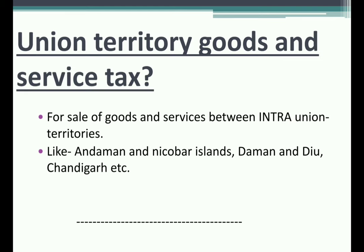The last type of tax in GST is UGST — Union Territory Goods and Service Tax, also written as UTGST. This applies to the sale of goods and services between union territories. The union territories included are: Andaman and Nicobar Islands, Daman and Diu, Chandigarh, Lakshadweep, Pondicherry, and Dadra and Nagar Haveli. Any transaction within or between these union territories will be counted under UGST.